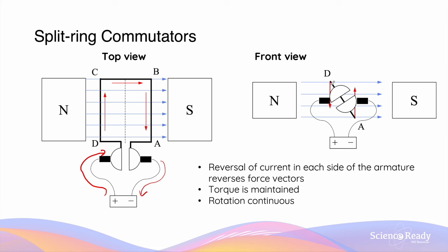So now, the force vector on side CD will be acting downwards, and the force vector on side AB will be acting upwards. This allows the armature to continue to rotate in the anti-clockwise direction.